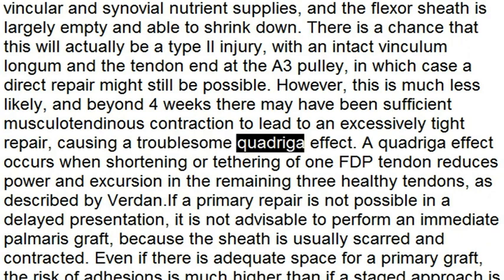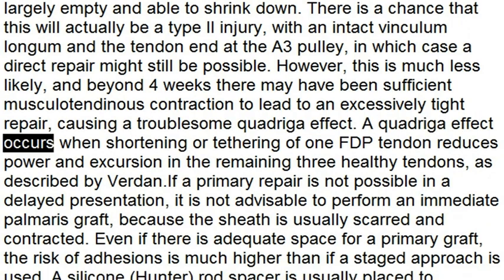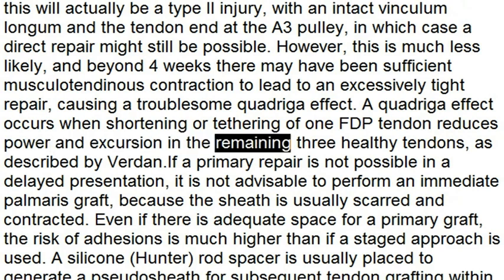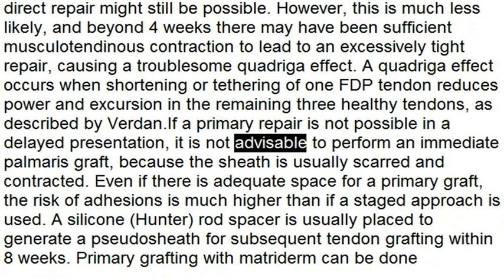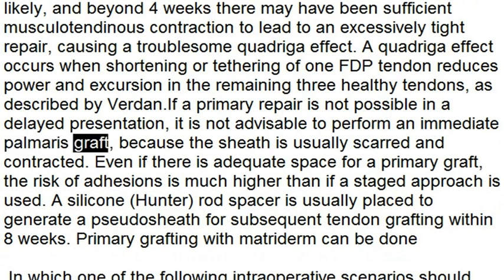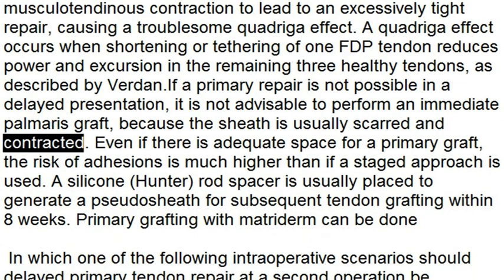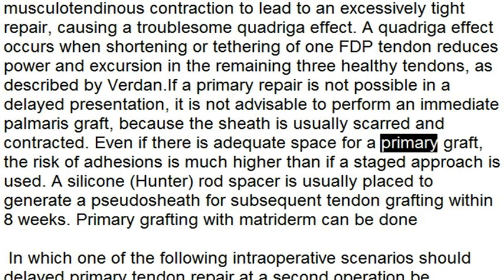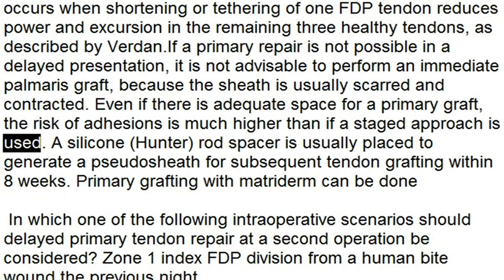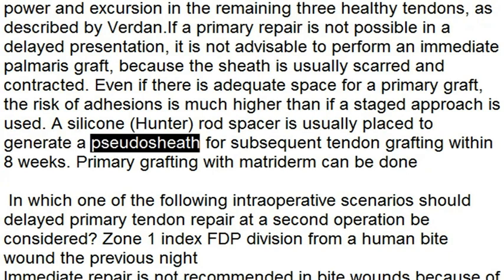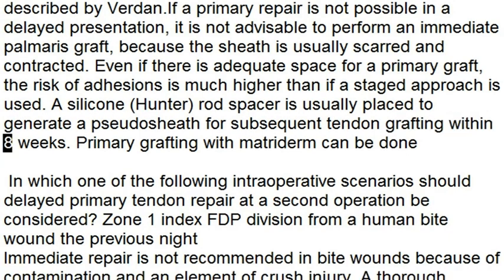A quadriga effect occurs when shortening or tethering of one FDP tendon reduces power and excursion in the remaining three healthy tendons. If a primary repair is not possible in a delayed presentation, it is not advisable to perform an immediate palmaris graft because the sheath is usually scarred and contracted. Even if there is adequate space for a primary graft, the risk of adhesions is much higher than with a staged approach. A silicone Hunter rod spacer is usually placed to generate a pseudo-sheath for subsequent tendon grafting within 8 weeks.